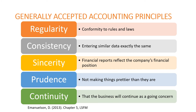You need to understand the generally accepted accounting principles. There is regularity — you must regularly conform to the rules and laws. There is consistency — you have to enter data exactly the same way so you can compare across years and organizations. They have to be sincere, meaning honest and actually reflecting the financial position. You have to have prudence, meaning not making things look prettier than they are. And you need continuity so the business will continue as a going concern. These standards exist because of professional ethical standards, laws, and the need to be transparent — whether for management, investors, donors, members, or taxpayers.